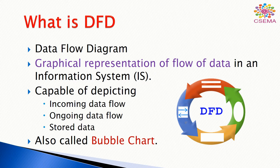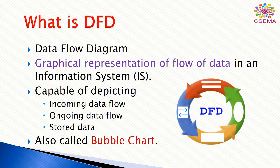The DFT diagram is constructed in a way that uses multiple bubbles, which is why the DFT is also called a bubble chart. There is a prominent difference between the DFT and a flowchart. Sometimes we see symbols that look similar to flowcharts, but it is totally different because flowcharts depict the flow of data in the system at various levels from one module to another. DFT does not contain any control or branch elements. The DFT is used by software developers and designers to represent the flow of data in information systems.